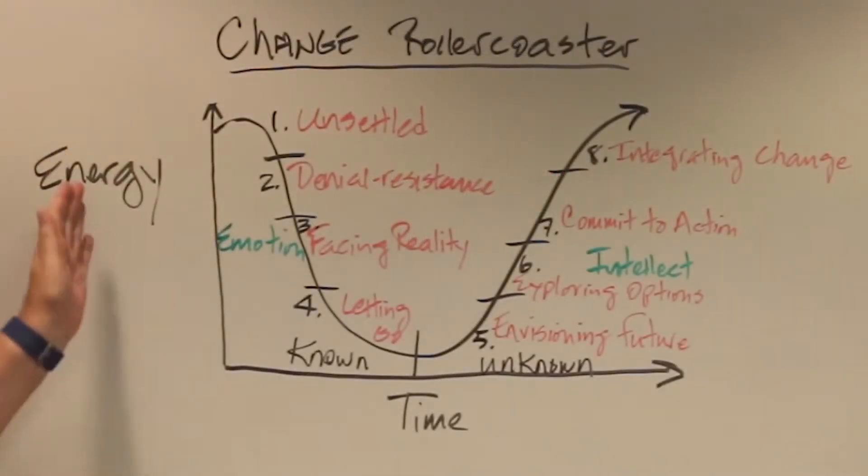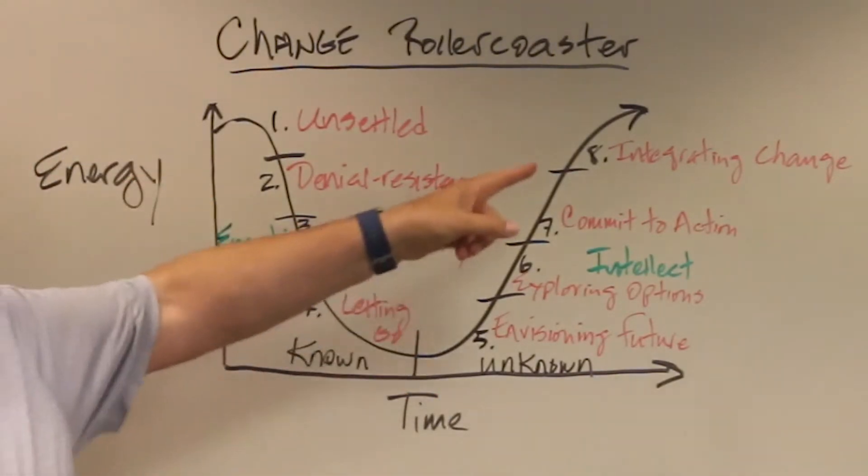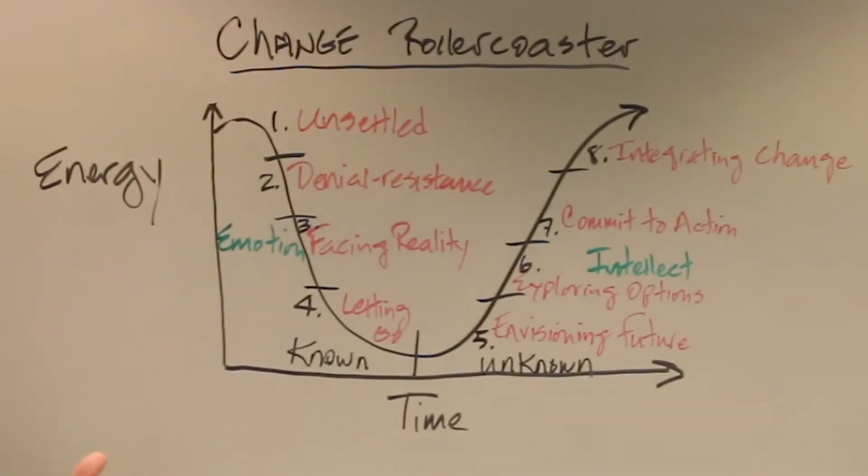First, if you put it on axes of energy and time, this is increasing energy, this is increasing time. A change process looks like this for everyone in every organization. We go through the same processes, amazingly enough, and there are eight stages that have been identified by Gil Rendell. So let me just cover those.